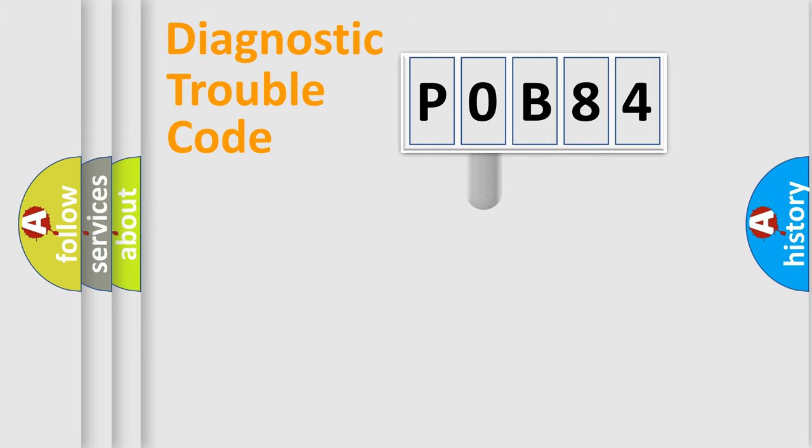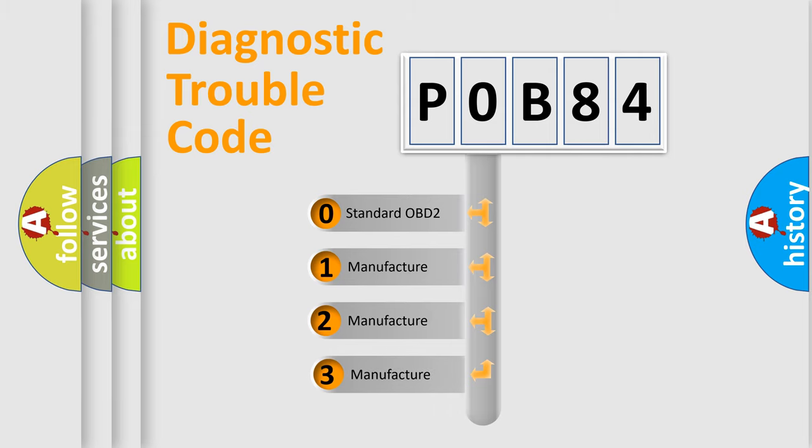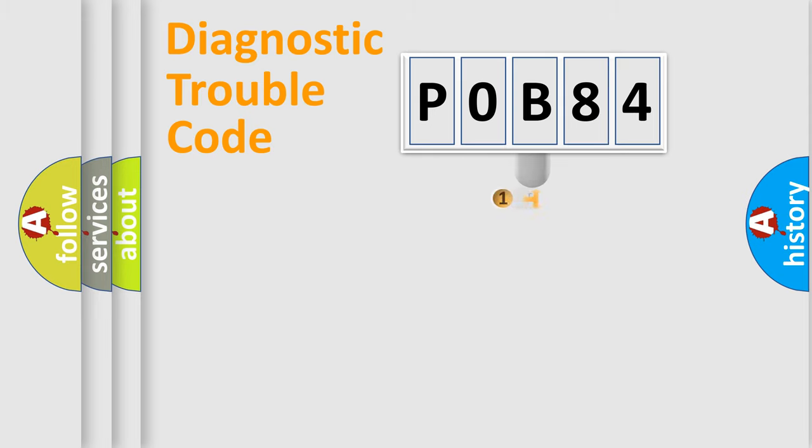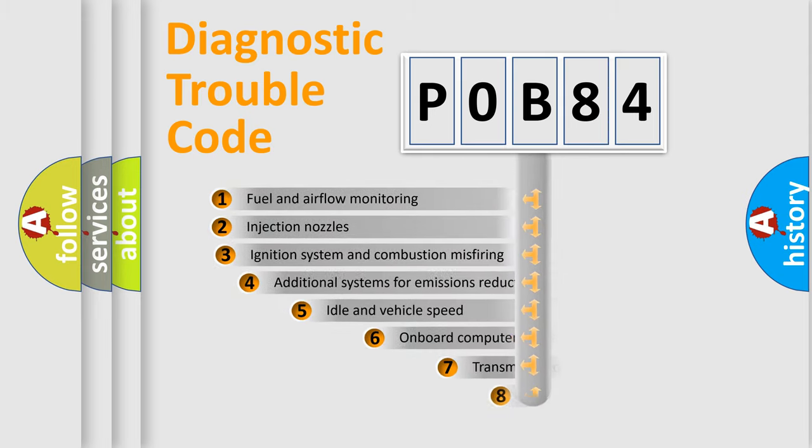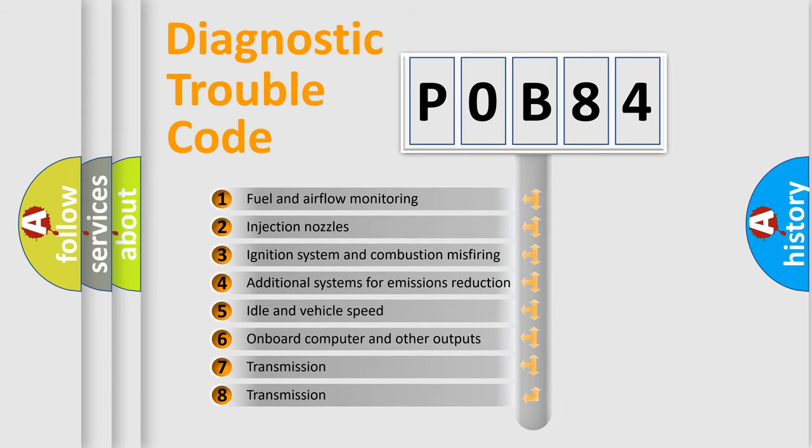This distribution is defined in the first character code. If the second character is expressed as zero, it is a standardized error. In the case of numbers 1, 2, or 3, it is a more specific expression of the car-specific error.